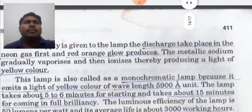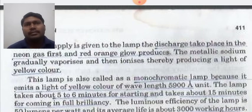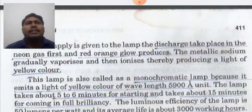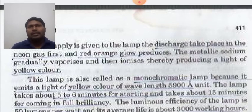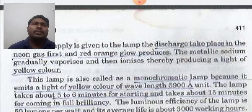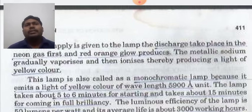When supply is given to the lamp, the discharge takes place in the neon gas first and a red-orange glow is produced. The metallic sodium gradually vaporizes and ionizes, thereby producing a light of yellow color. This lamp is also called a monochromatic lamp because it emits light of yellow color of wavelength 5900 Ångströms.